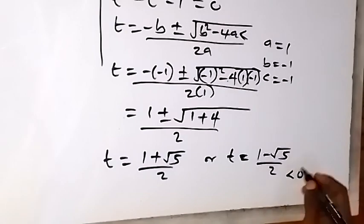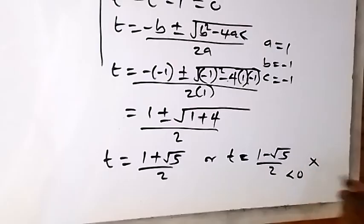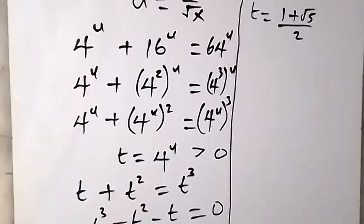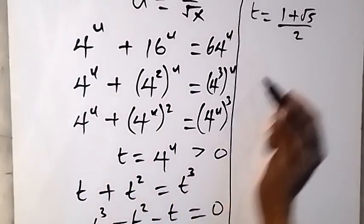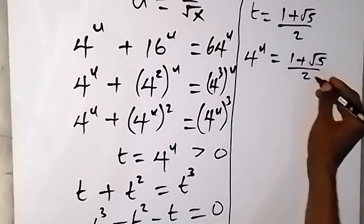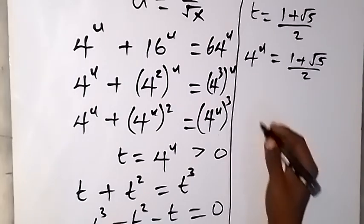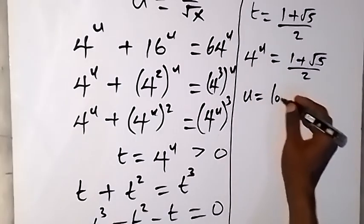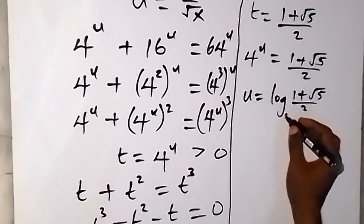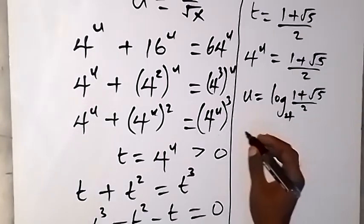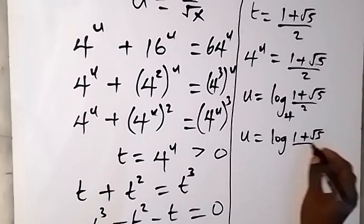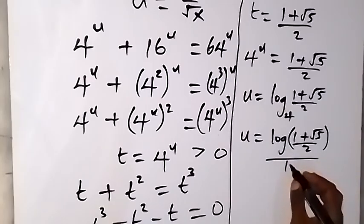Since t must be greater than 0, we reject (1 minus √5)/2 and take t equals (1 plus √5)/2. Substituting back, 4^u equals (1 plus √5)/2. Converting from index form to logarithm form, u equals log base 4 of (1 plus √5)/2, which we can also write as log((1 plus √5)/2) divided by log 4 using the change-of-base rule.